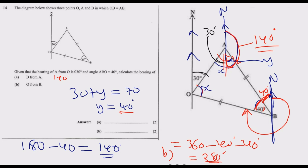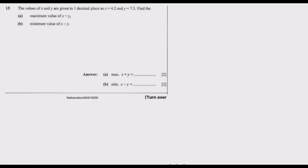That's how we get the four marks on question 14. Let's move to question 15. Question 15 states: the values of x and y are given to one decimal place as x equals 4.2 and y equals 7.3. Find: a) the maximum value of x plus y, and b) the minimum value of x minus y.